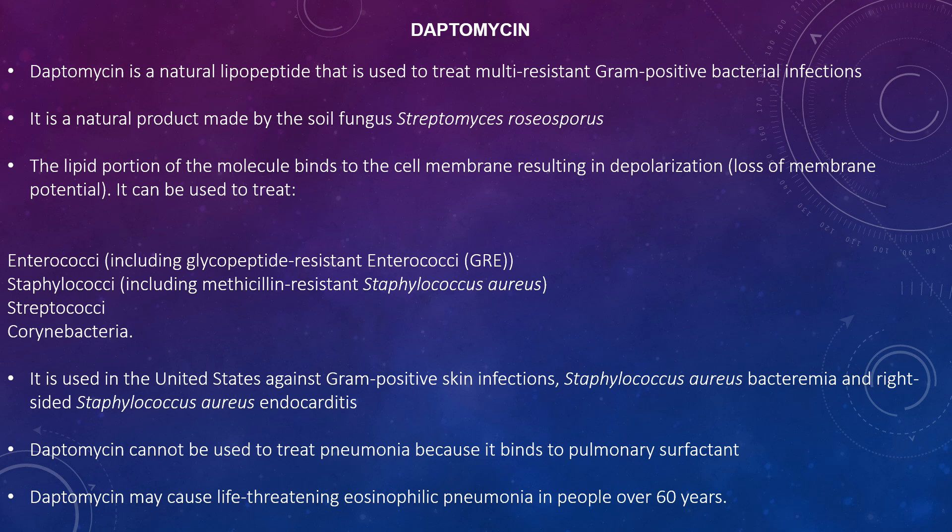Daptomycin is a natural lipopeptide used to treat multi-resistant gram-positive bacterial infections. It is a natural product made by the soil bacterium Streptomyces roseosporus. The lipid portion of the molecule binds to the cell membrane, resulting in depolarization and loss of membrane potential. It can be used to treat enterococci including glycopeptide-resistant enterococci (GRE), staphylococci including methicillin-resistant Staphylococcus aureus (MRSA), and Corynebacteria. In the United States it is used against gram-positive skin infections, S. aureus bacteremia, and right-sided S. aureus endocarditis.